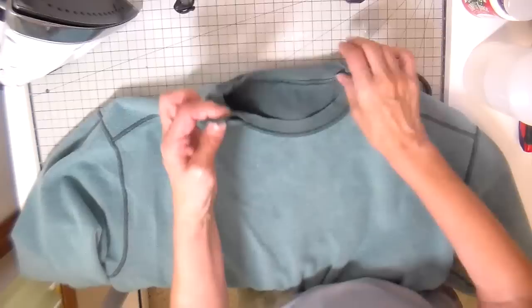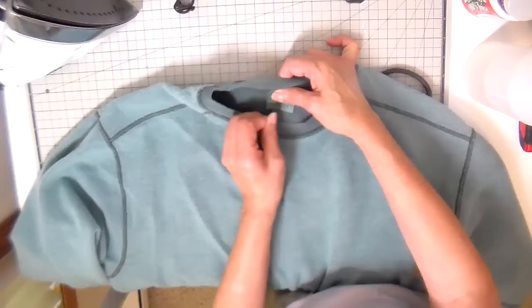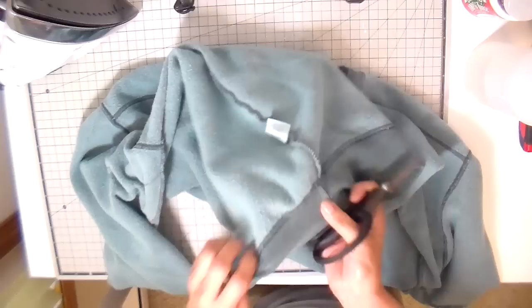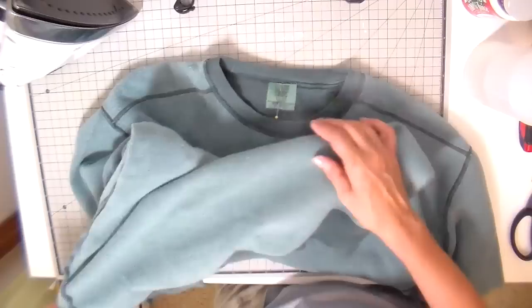I'm going to cut this label off that has the size on it and zigzag that into place on the inside. There's also a label on the side of these sweatshirts—this is the content label—and I'm going to clip that off too, just so it doesn't show on the outside, and we'll be placing that underneath the other label.